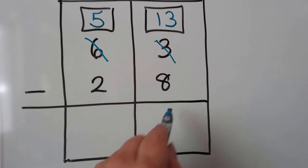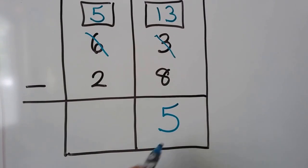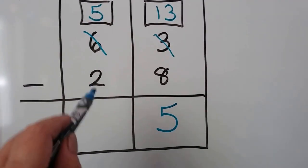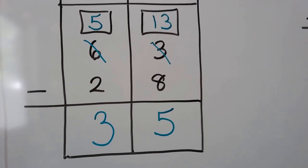And we give that 10 to the ones place, so the 3 becomes a 13. 13 minus 8 is 5. And 5 minus 2 is 3. We get 35.